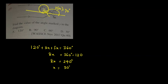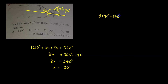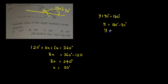Proceeding to find the value of Y: the angle 90 degrees and Y are co-interior angles. Therefore Y plus 90 degrees must equal 180 degrees, because co-interior angles add up to 180 degrees. Therefore the value of Y equals 180 minus 90 degrees, which gives us Y as 90 degrees.